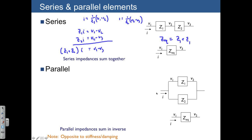Similarly, if we have two items in parallel, Z1 and Z2, then the equivalent impedance is found by taking the sum of the inverses like so. So, again, we can easily derive this.